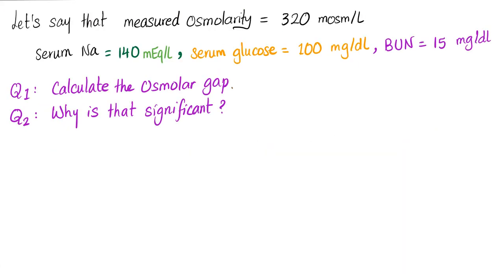Question time. Let's say that the measured osmolality is 320, serum sodium is 140, serum glucose is 100, and BUN is 15. When you see these numbers together in a question, they want the osmolar gap to be calculated. Calculate the osmolar gap and explain why it is significant. Pause the video and try to answer it.